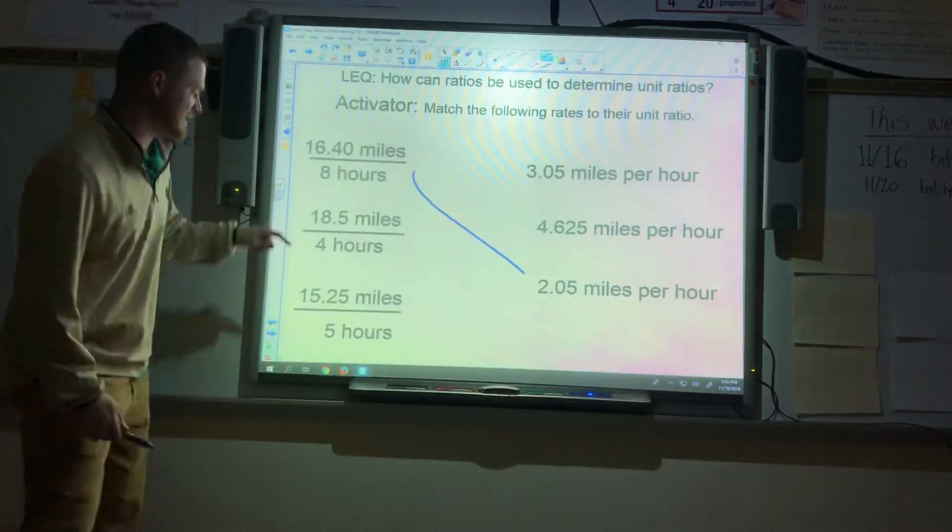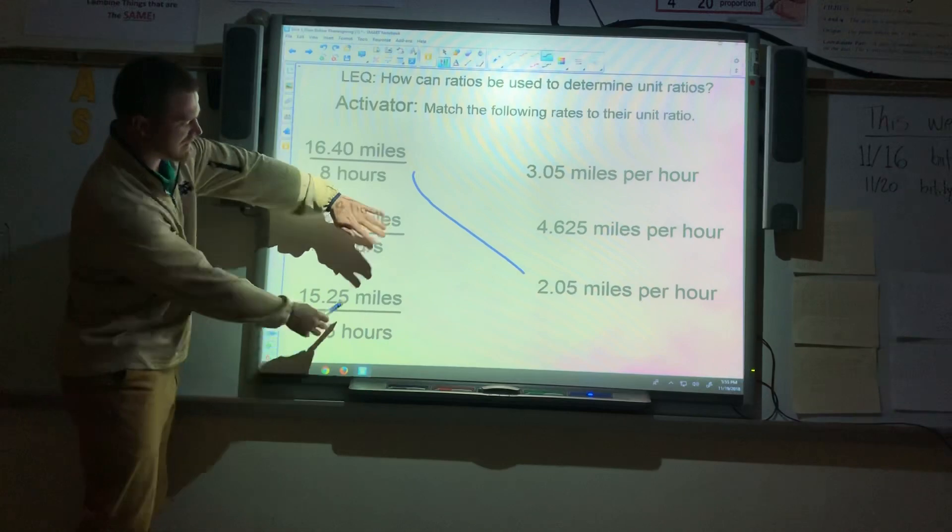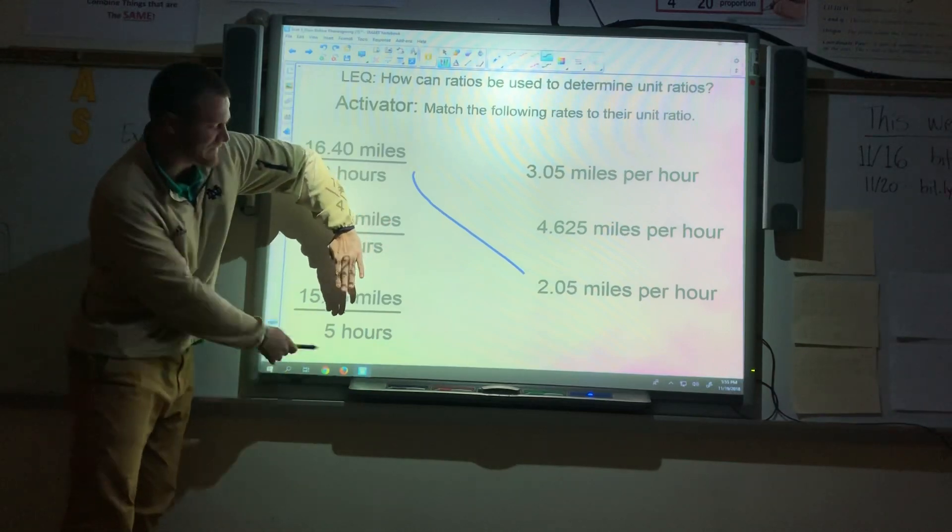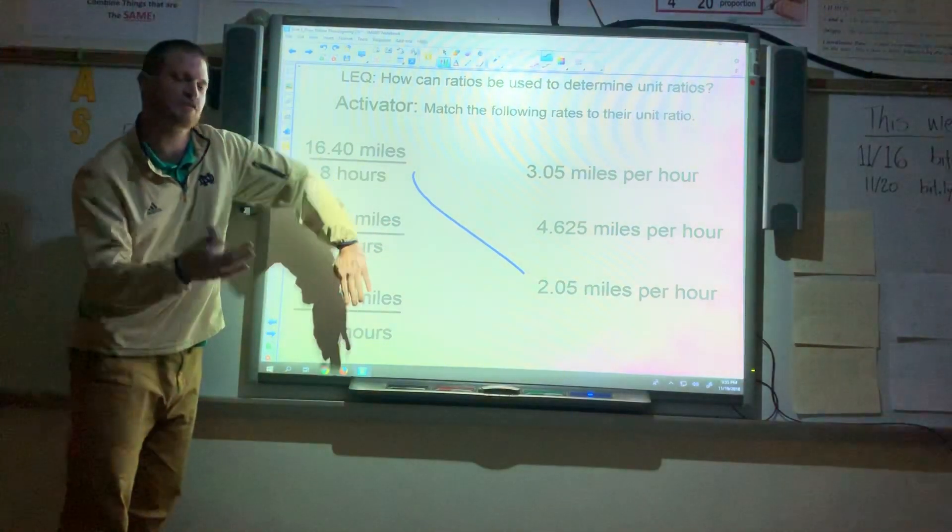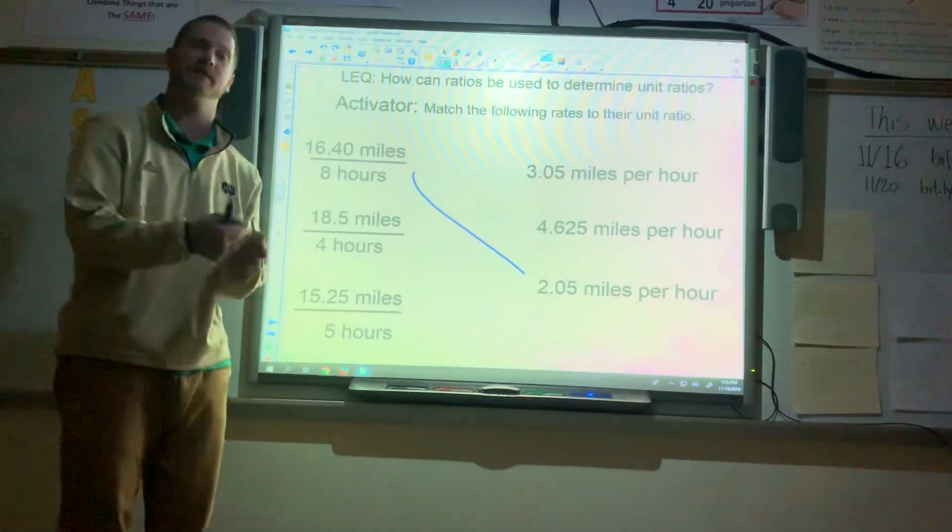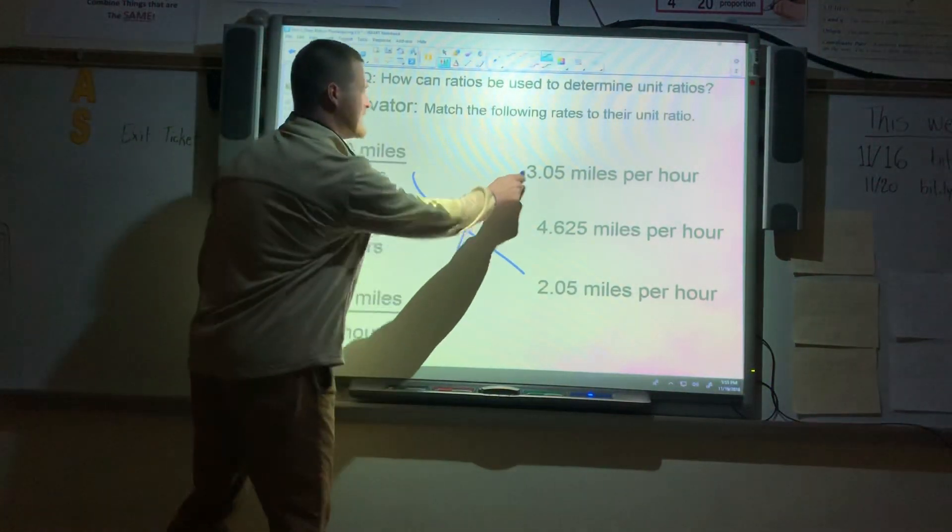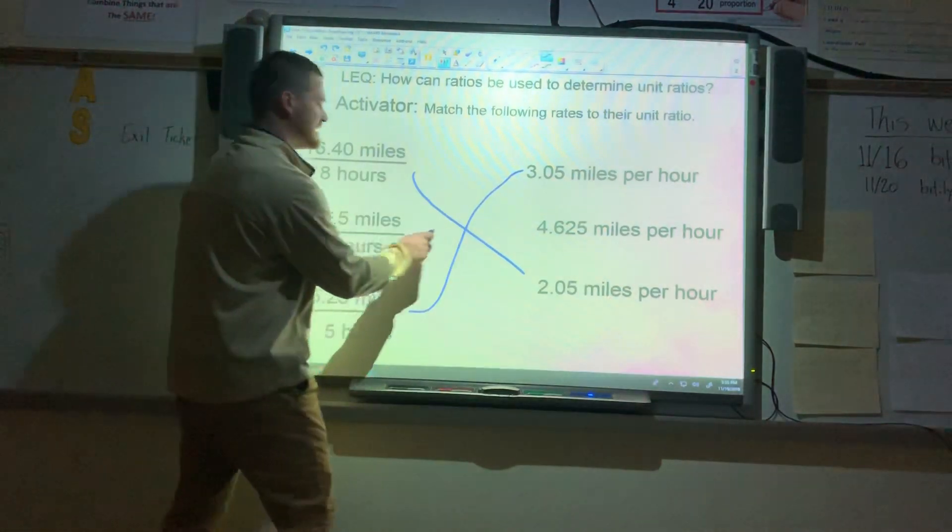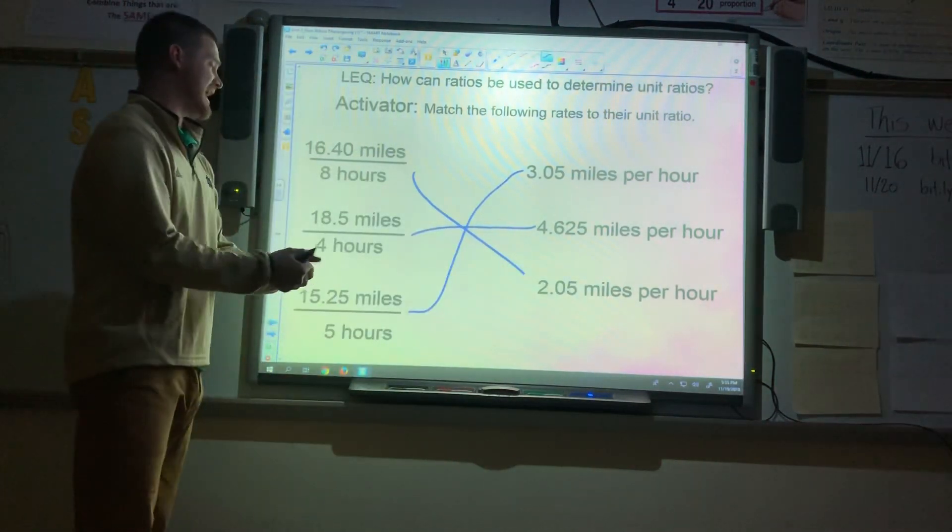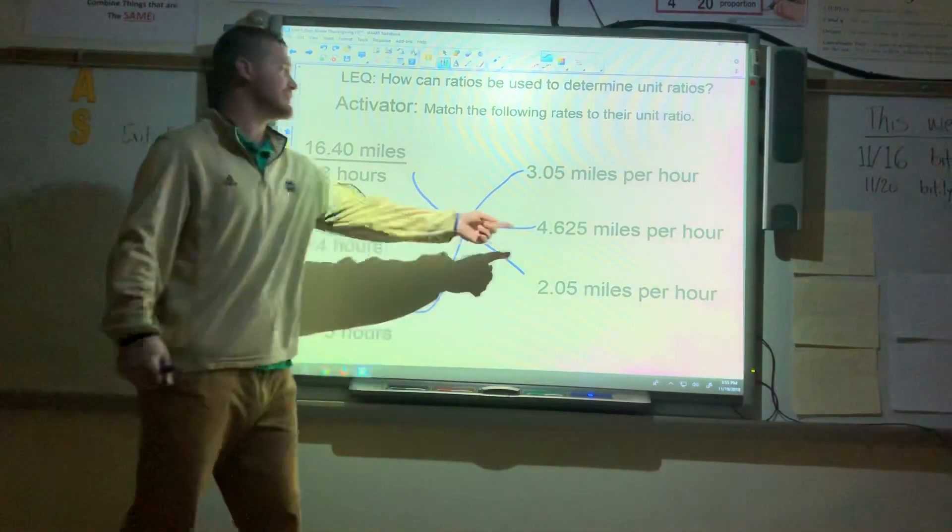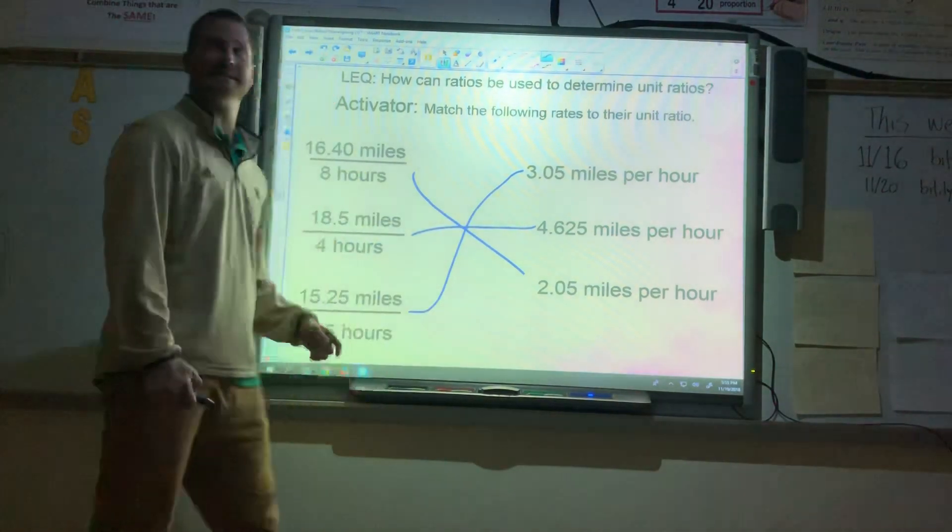Now, another one that's easy to estimate. Let's look at this one down here. Let's round this to 15. Well, 15 over 5, 15 divided by 5 is 3. So I know that 15.25 divided by 5 is going to be a little greater than 3. And that would be matched to that guy up there. Leaving last but not least. If you type in 18.5 divided by 4, you do in fact get 4.625.